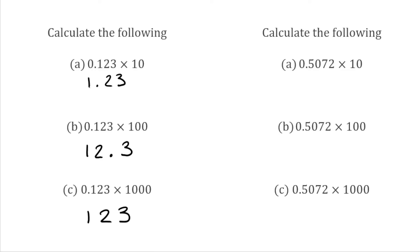For our final set of questions, part A: 0.5072 multiplied by 10. We move all the digits one place to the left. The 5 makes it over to the left-hand side of the decimal point, and all the digits after remain on the right, so we get 5.072. For part B, 0.5072 multiplied by 100 — two zeros means we move the digits two places to the left. The 5 and the zero both make it over to the left-hand side of the decimal, giving us 50.72.